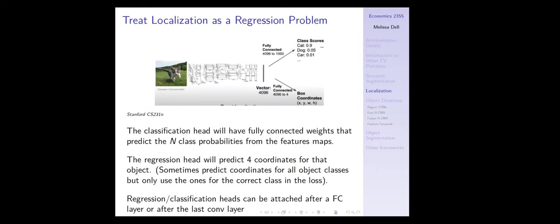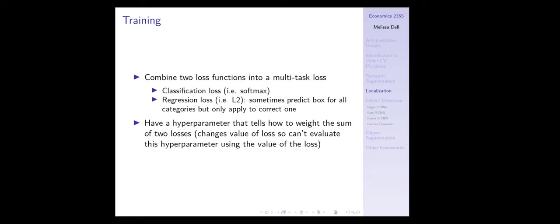This is called a multi-task loss, and it comes up a lot. You combine the two loss functions — a classification loss (say softmax) and a regression loss (like L2). Sometimes you predict boxes for all categories but only apply the loss of the correct one. To combine these two losses, you need a hyperparameter that tells you how to weight them together. This is a hyperparameter you need to choose.